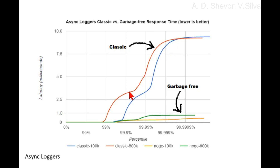This makes sense: logging more means more pressure on the garbage collector, resulting in more minor GC pauses. We experimented with reducing the load to 50,000 or even 5,000 messages per second, but this did not eliminate the three-millisecond pauses — it just made them occur less frequently.